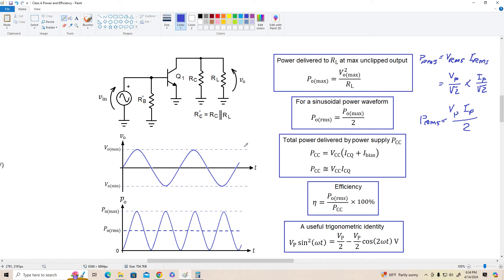Now the total power delivered to the amplifier circuit by the power supply we're going to denote as P sub CC and that's equal to VCC times ICQ plus the biasing current. If I sub bias is small enough to ignore then we can use this approximation. For our example we're going to use the more accurate equation here. And finally the efficiency of the amplifier is the output power delivered to the load in RMS divided by the total power absorbed from the power supply P sub CC times 100 percent.